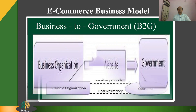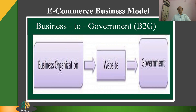Business to Government, B to G: this model is a variant of the business-to-business model. Such websites are used by the government to trade and exchange information with various business organizations. These websites are accredited by the government and provide a medium for businesses to submit application forms to the government.